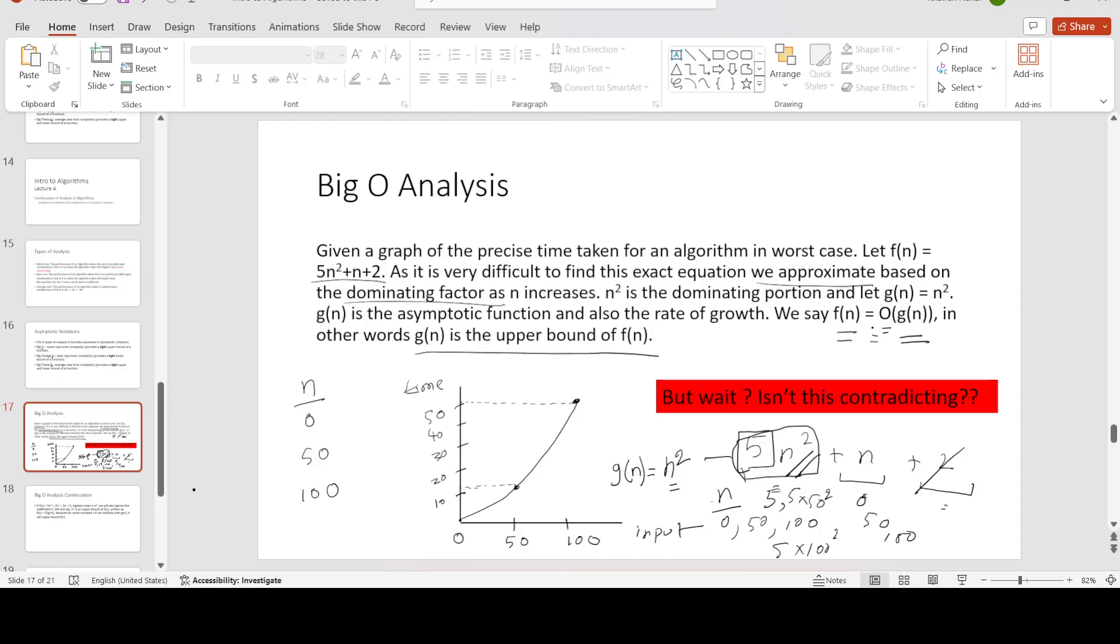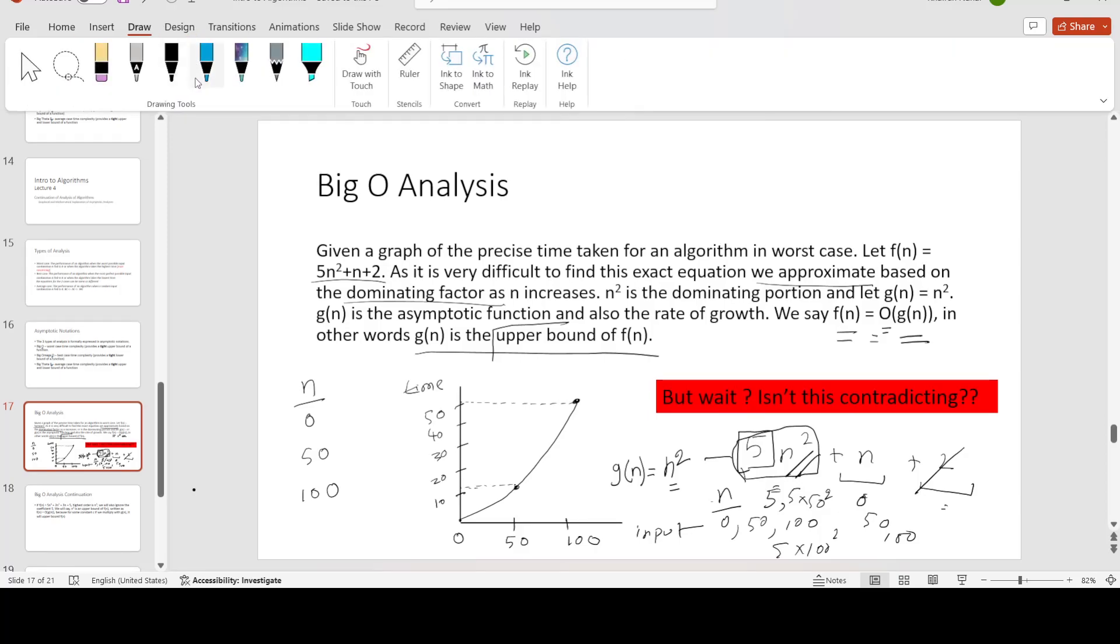Okay, or we can say f(n) equals Big O of g(n) means that g(n) is the asymptotic function of f(n), or g(n) is the approximated function of f(n). It also means g(n) is the upper bound of f(n). Now, but this is contradicting, right? We said upper bound, g(n) is upper bound.